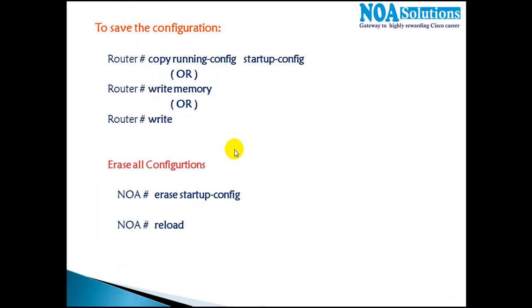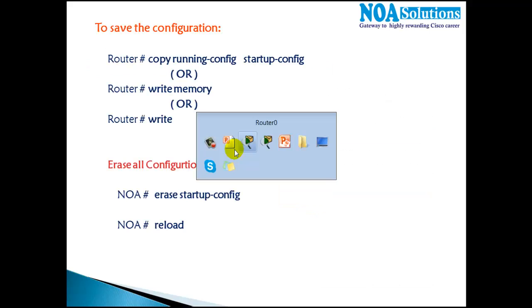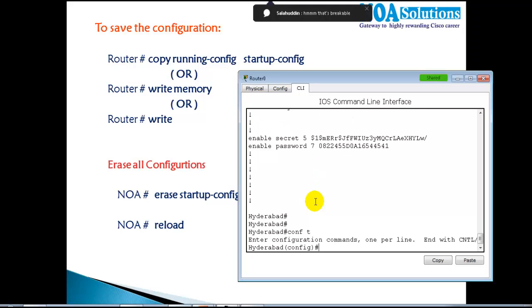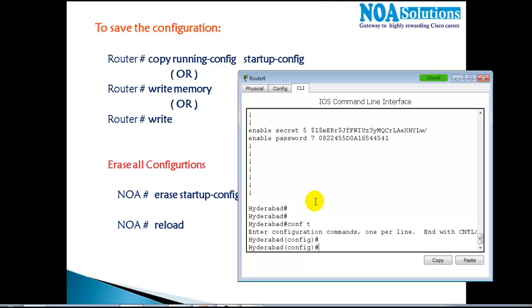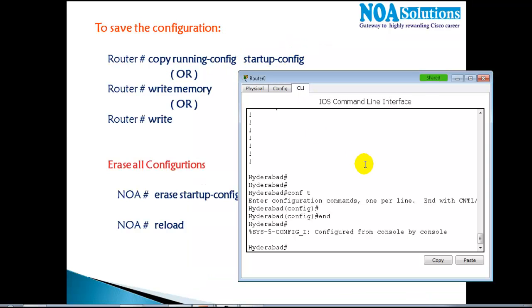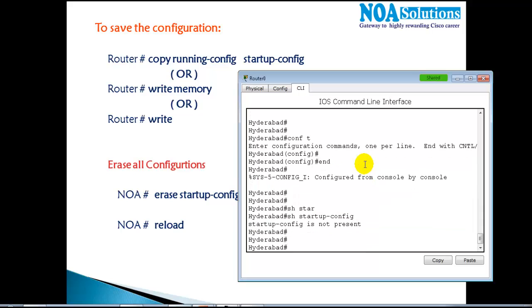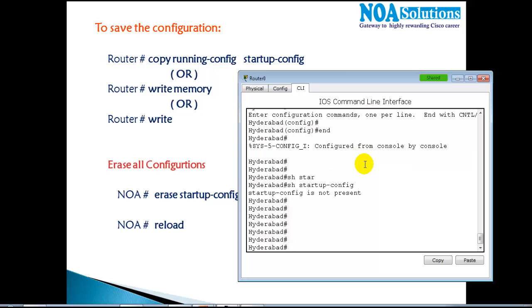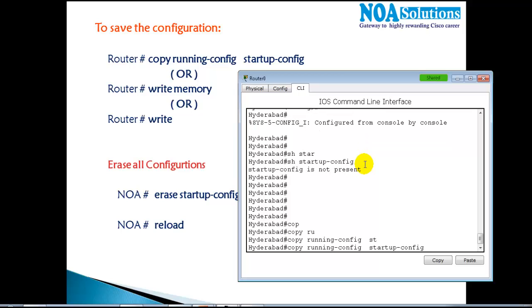Next, let's look at saving configurations. Whatever configurations I've done are currently only in the running configuration in RAM. To save them, I use 'copy run start' — which copies from RAM to NVRAM. If I check 'show startup-config' before saving, the configurations are not present in NVRAM, meaning if I power off the device I'll lose everything. Alternatively, I can use 'write memory' or just 'write', which does the same job.